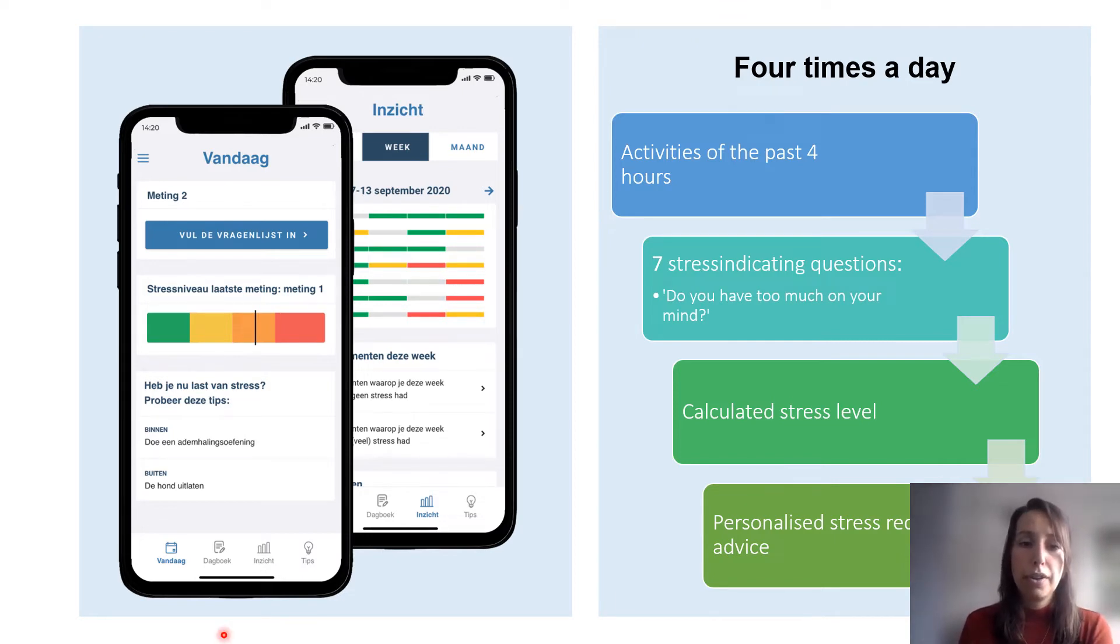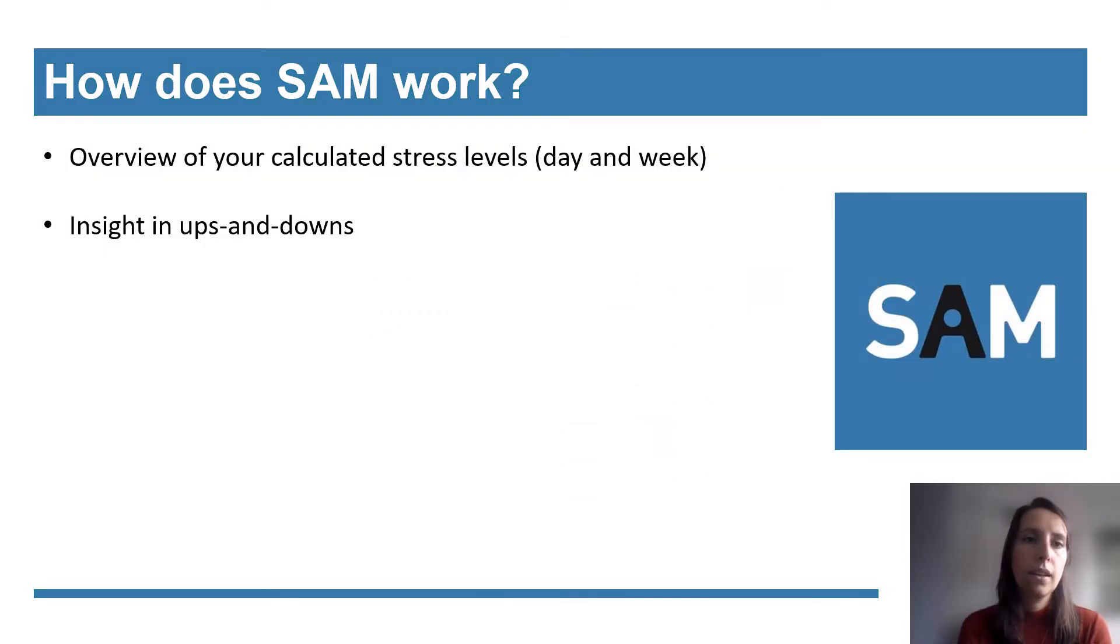And there's also a function in the app with an overview in which the user can see how they scored over the week or over the day, and you can have a look at it and ask yourself, well, what did I do when I was in the red phase? So in brief, SAM generates an overview of the calculated stress levels in a chart over a daily and weekly basis, and this overview chart creates insight in the ups and downs related to the stress in daily life. You can have a look at it if grocery shopping is a stressful event and maybe adjust how they do that.